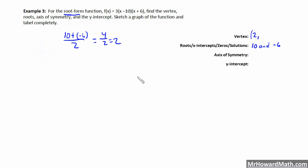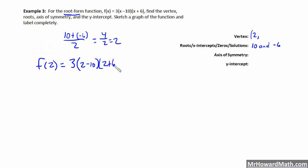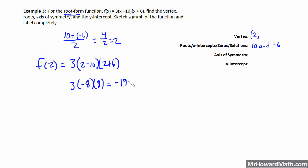If our vertex has an x-coordinate of 2, to find the y-coordinate we take f of 2. That's 3 times the quantity 2 minus 10 times the quantity 2 plus 6. So that's 3 times negative 8 times positive 8, which is negative 64 times 3, giving us negative 192. So the y-coordinate of our vertex is negative 192.